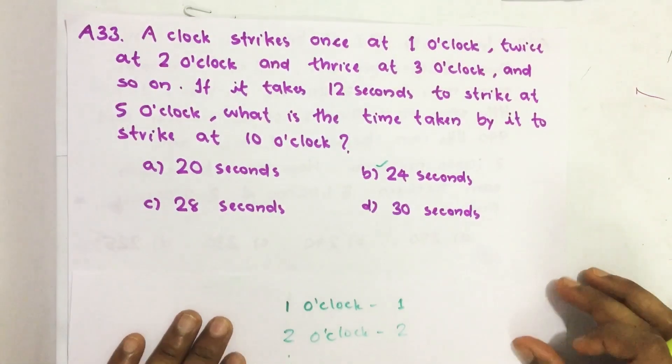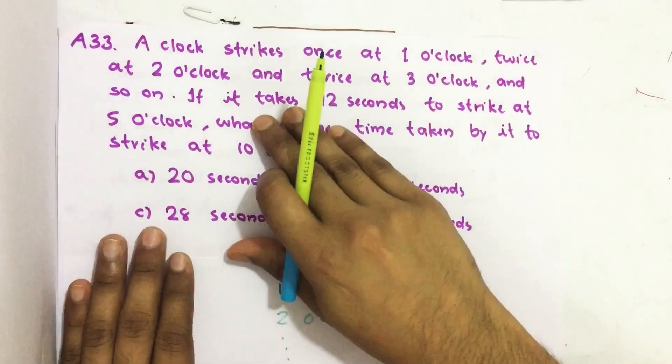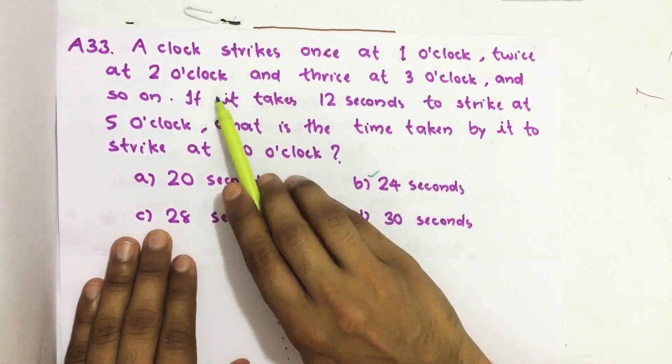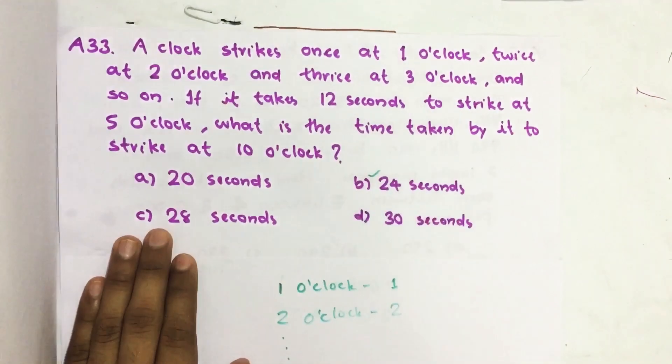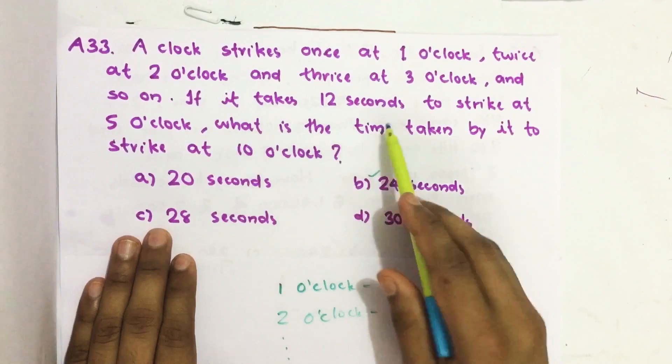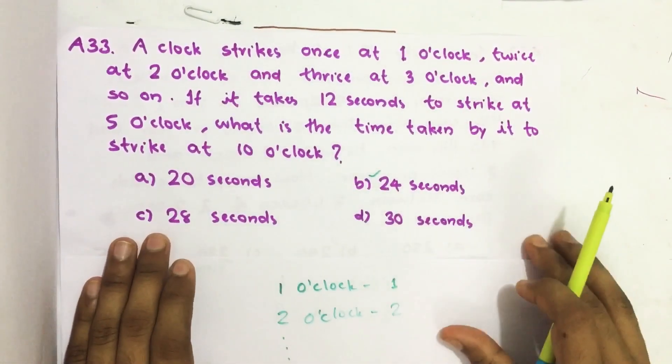Hello everyone, here I'm going to solve 2017 CSAT question number 33 from question paper series A. A clock strikes once at 1 o'clock, twice at 2 o'clock and thrice at 3 o'clock and so on. If it takes 12 seconds to strike at 5 o'clock, what is the time taken by it to strike at 10 o'clock?